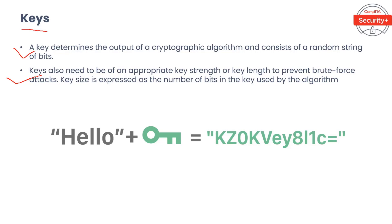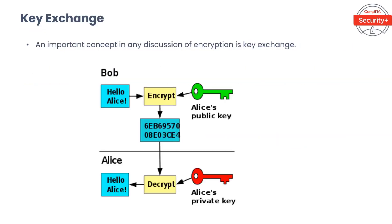Keys also need to be of an appropriate key strength or key length to prevent brute force attacks. Key size is expressed as the number of bits in the key used by the algorithm — the longer the key, the more difficult it is to crack. When keys are generated, it needs to be done in such a way that the key contains enough entropy or randomness. Cryptography relies on random numbers; however, pseudorandom numbers are also commonly used so that the numbers appear random, at least statistically, but are not truly so.